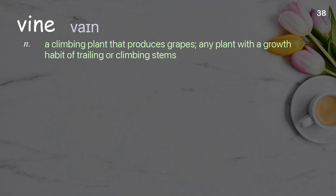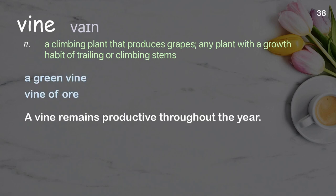Vine: a climbing plant that produces grapes; any plant with a growth habit of trailing or climbing stems. Examples: a green vine, vine of ore. A vine remains productive throughout the year.